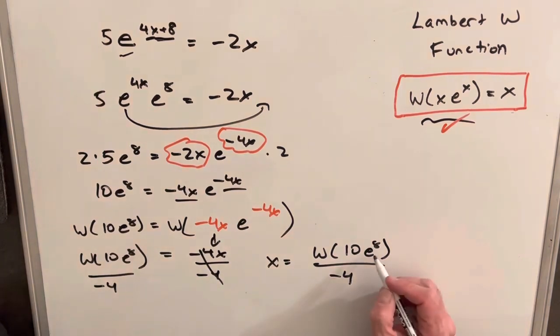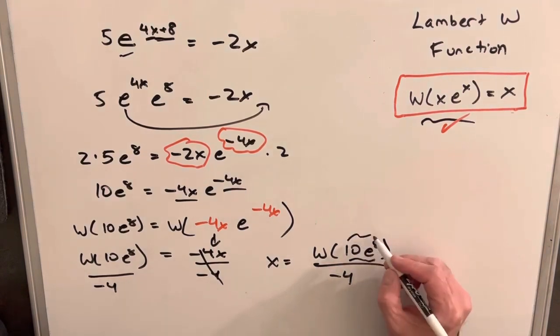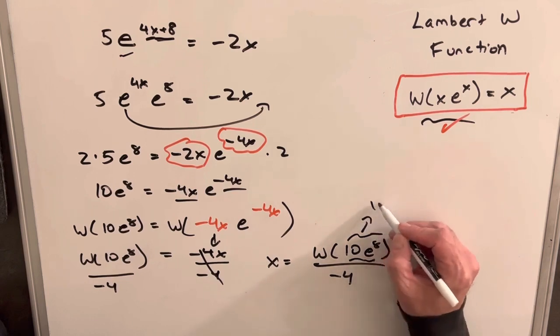Now we can see this is actually a really large number. I don't even know what that is, but it's clearly positive. When we have a positive real value in our Lambert W function, this is just going to give one real solution.